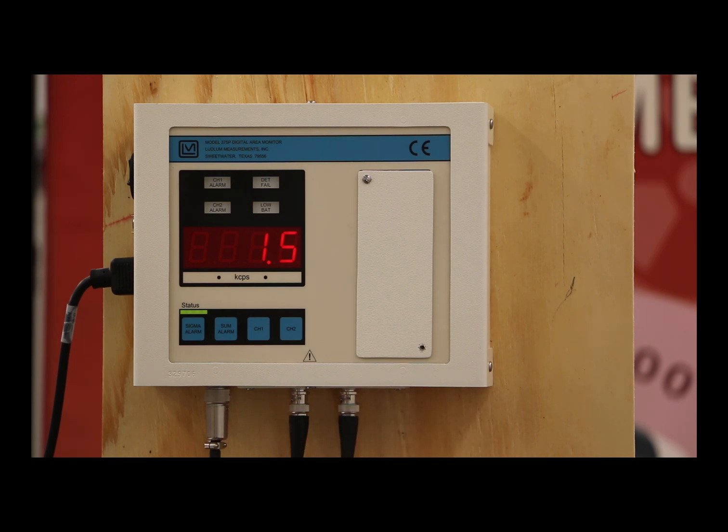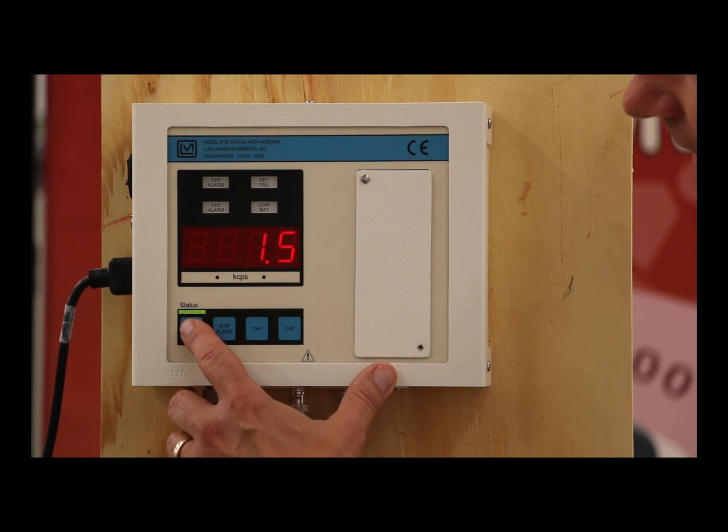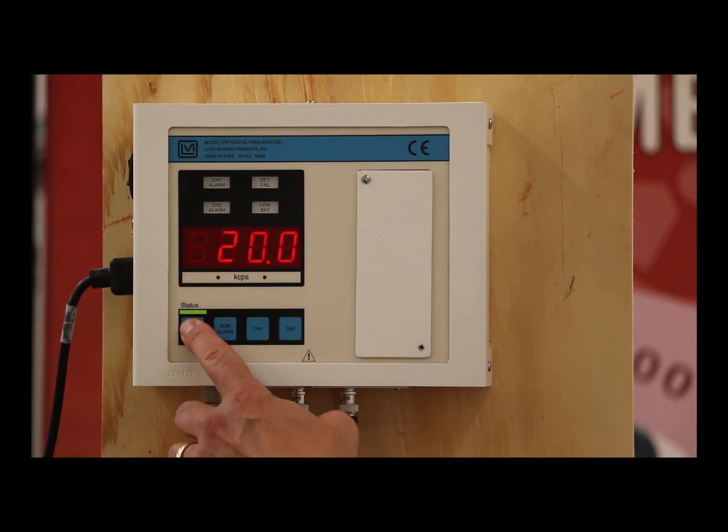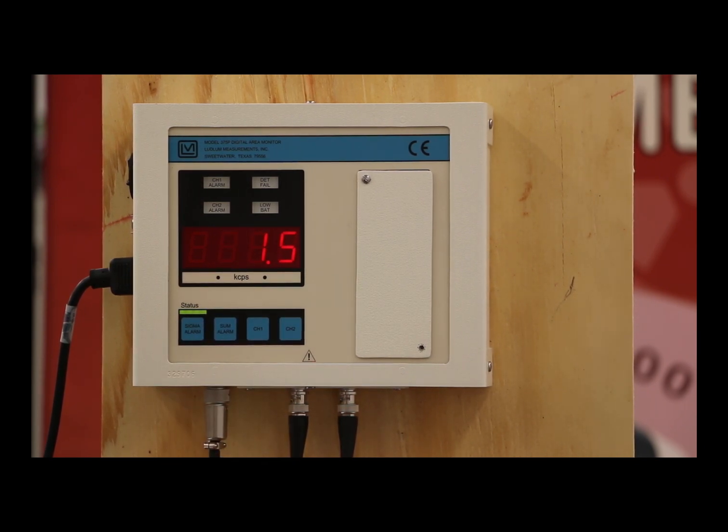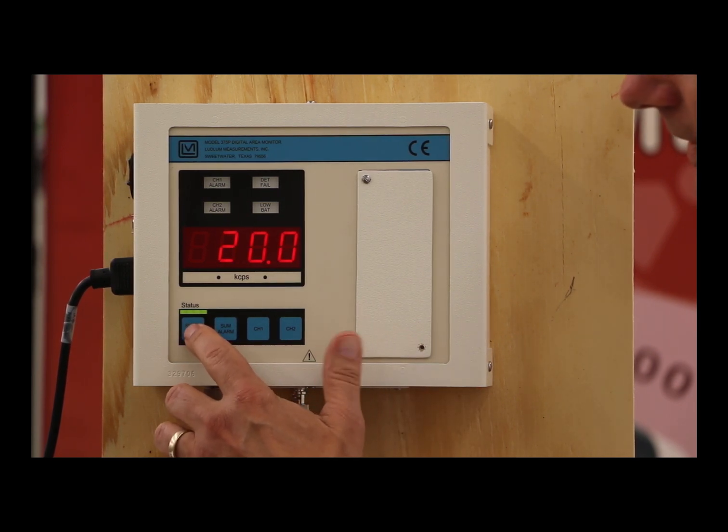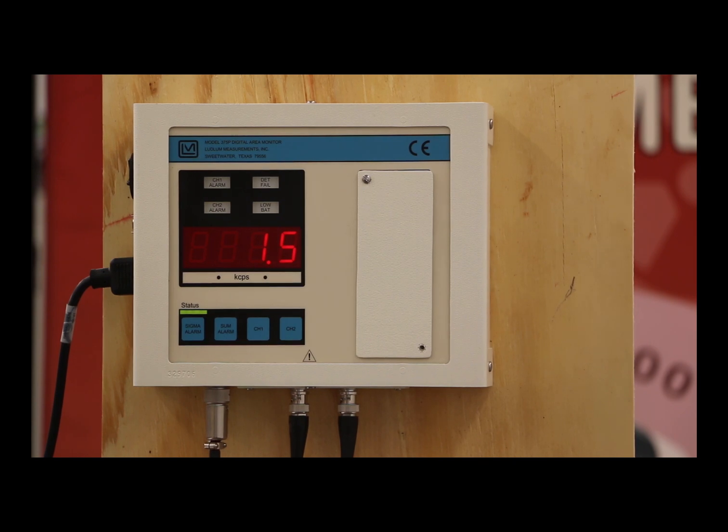So we set the sigma alarm. In this case, it's set, as I push the button here, to 20 sigma. So 20 times that square root of the background gives you my differential. Anything background plus that differential of 20 times the square root of the background would give you an alarm. That tends to be a very fast alarm, and really this is the alarm that you're going to mostly see when you're using these as a portal.